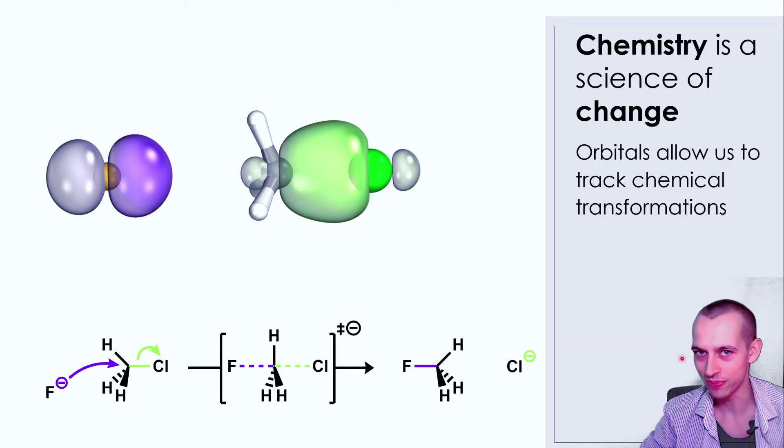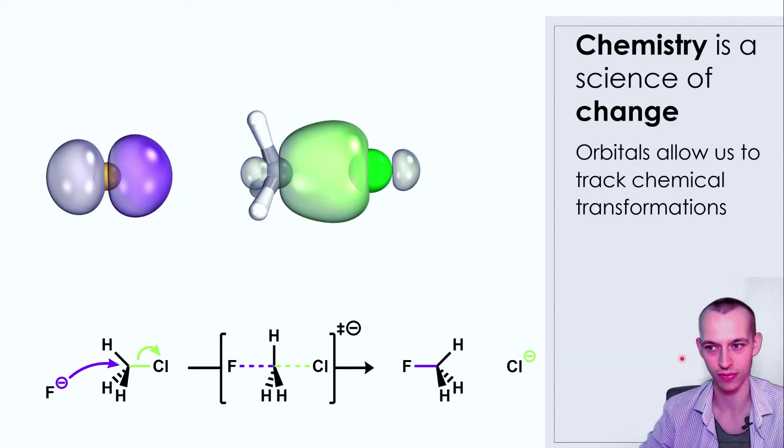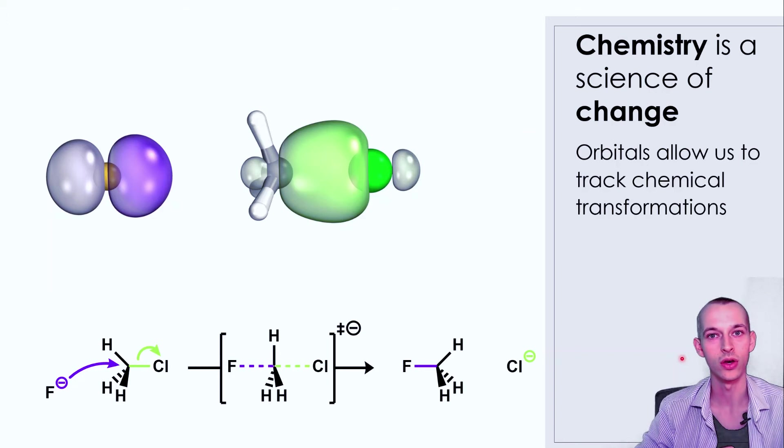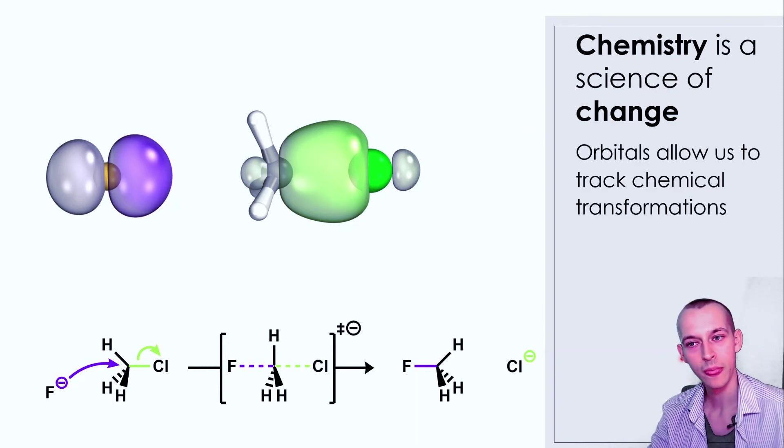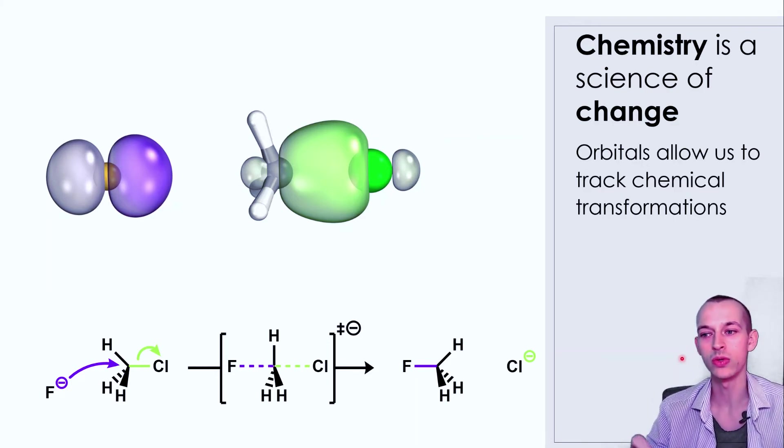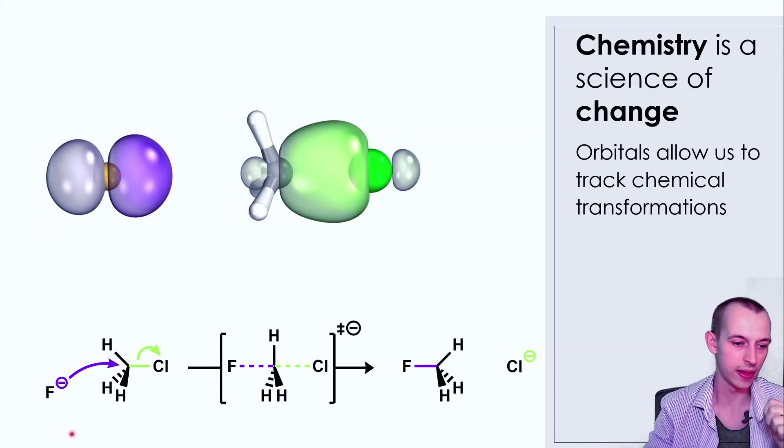Chemistry is and always has been a science of change. This comes a little bit from the fact that it emerged out of alchemy, which was fixated with looking for ways to transform common cheap metals like lead into rare expensive metals like gold. That fixation actually manifests itself today in the way that chemists talk about reactions. The orbitals allow us to track chemical transformations.